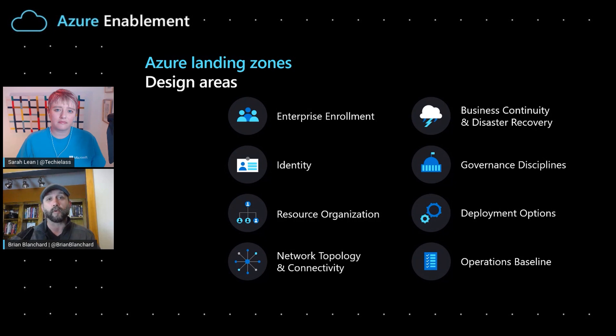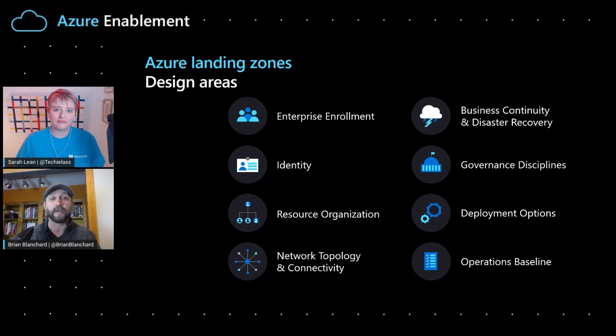Once you start deploying things, one of the most important things to consider is network topology and connectivity — how do you want things to be isolated and connected, and how do you want to reach back to on-prem? Then looking beyond that, as we get into the operational side of things, we have to consider your business continuity and disaster recovery plan, how do you govern your environments, how do you deploy things, and ultimately how do you make sure you have a sound operations baseline. The answers to each of these considerations vary depending on the customer and their operating model, but the questions always tend to be the same. We center each Azure landing zone around those eight design areas and build from there.